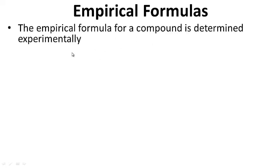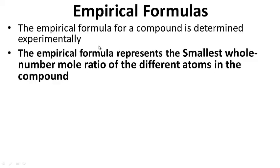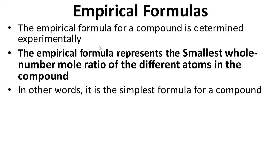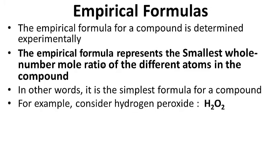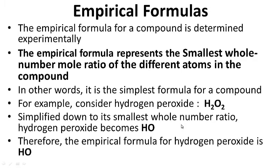Empirical formulas: the empirical formula for a compound is determined experimentally, in a lab. The empirical formula represents the smallest whole number mole ratio of the different atoms in the compound — in other words, it is the simplest formula for a compound. For example, consider hydrogen peroxide, H2O2. Simplified down to its smallest whole number ratio, hydrogen peroxide becomes HO. The ratio 2 to 2 becomes 1 to 1. Therefore, the empirical formula for hydrogen peroxide is HO.